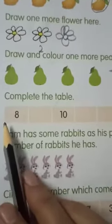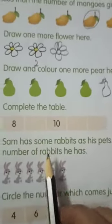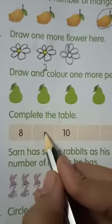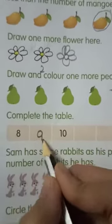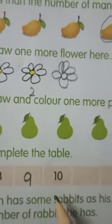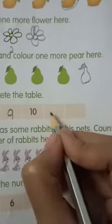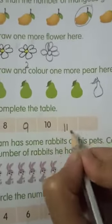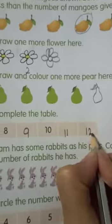Now, we have to complete the table here. 8, 9, 10. Then, what comes after 10? 11. And what comes after 11? 12. Okay.